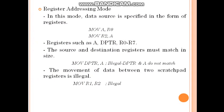As the name indicates, register addressing mode means the address of the destination is specified in the form of a register. In this mode, the data source is also specified in the form of a register. So both source and destination are specified in the form of registers — this is called register addressing mode.